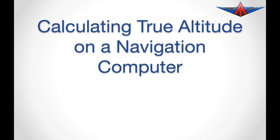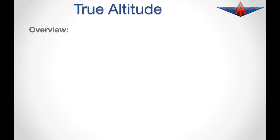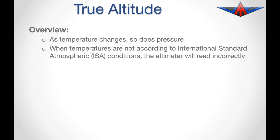In this video we're going to look at calculating true altitude. Before we do the calculation, we need to look at some background information. As temperature changes, so does pressure, and when temperatures are not according to the International Standard Atmospheric Conditions, otherwise known as ISA, the altimeter will read incorrectly.